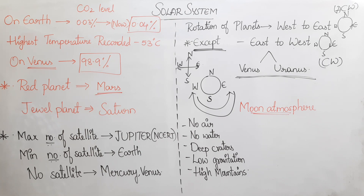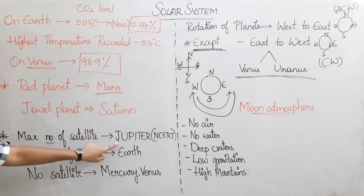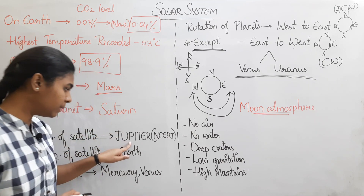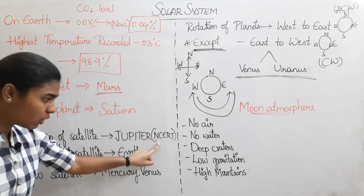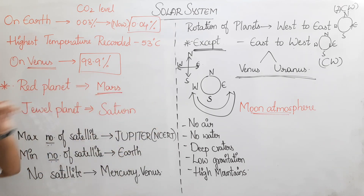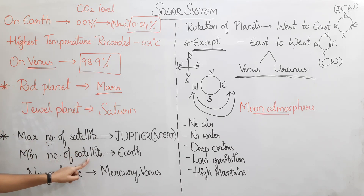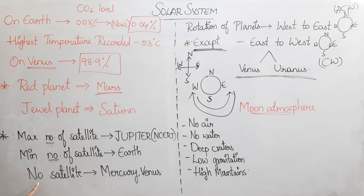Now let's talk about satellites. Earth has one satellite — the Moon. The planet with the most satellites, according to NCRT, is Jupiter. If you search Google the answer may show Saturn, but in NCRT the answer is Jupiter. The minimum number of satellites is Earth — one. Mercury and Venus have no satellites.